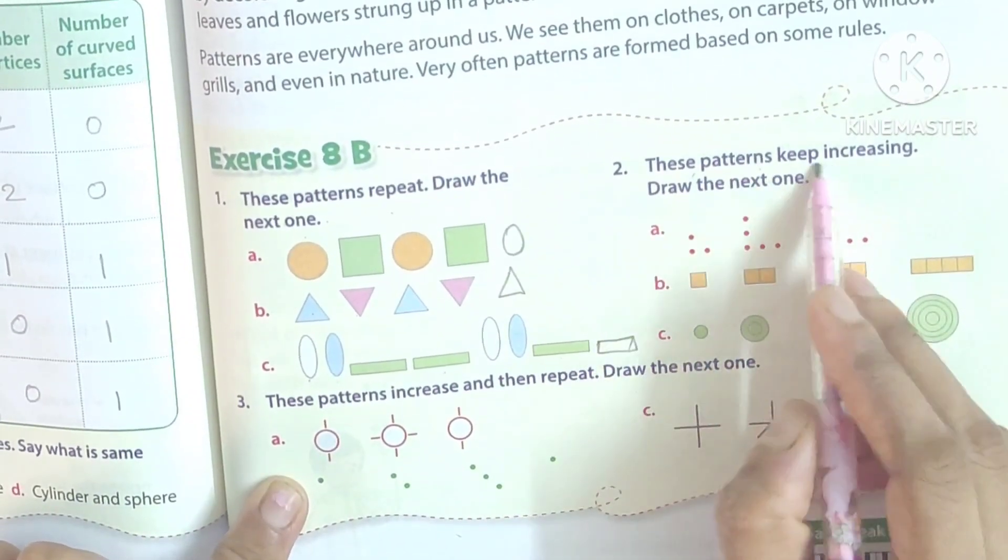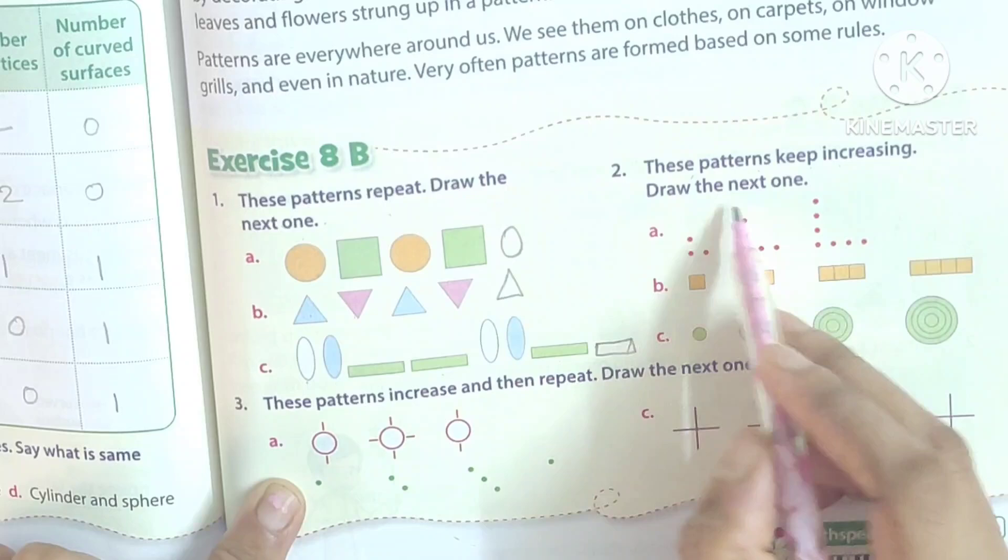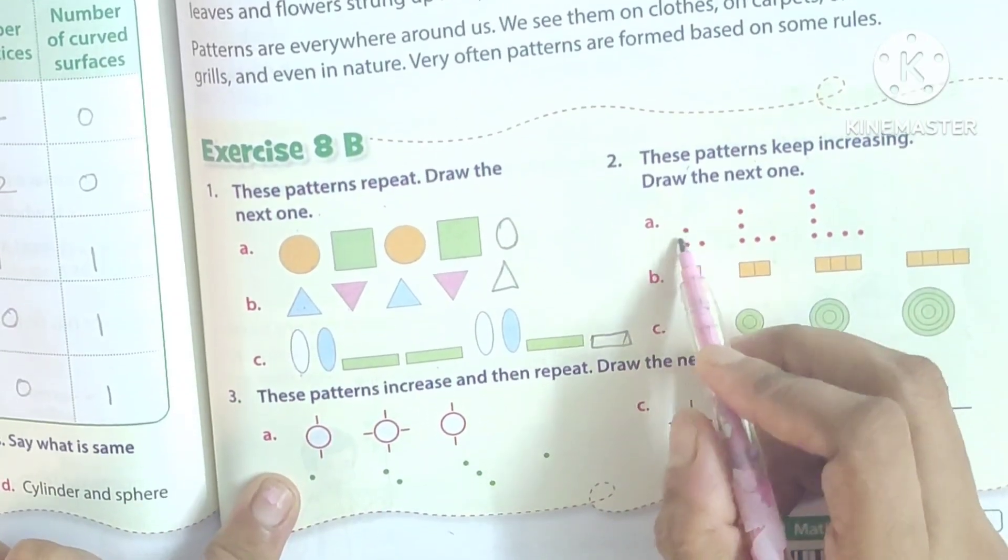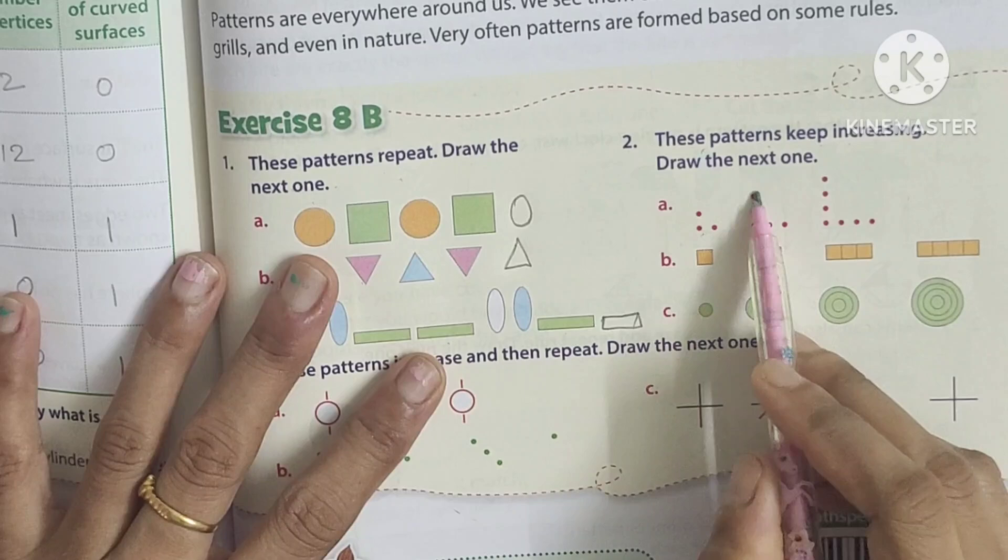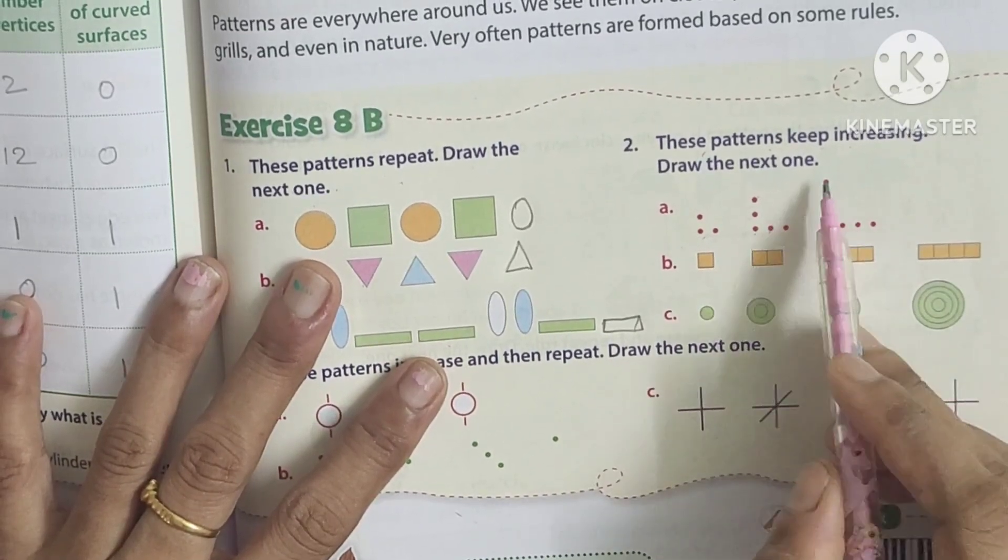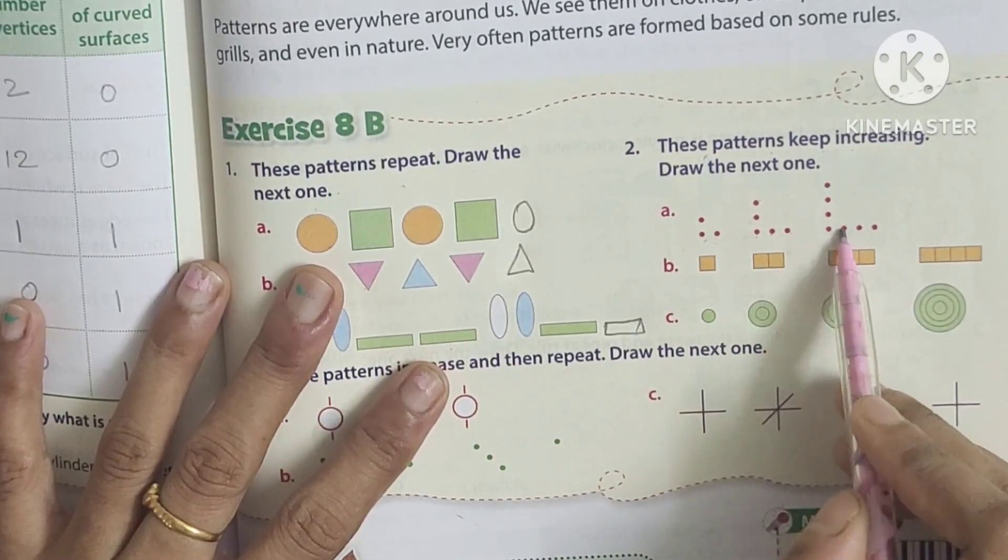These patterns keep increasing, draw the next one. So this is three: one two three four five, one two three four five six.